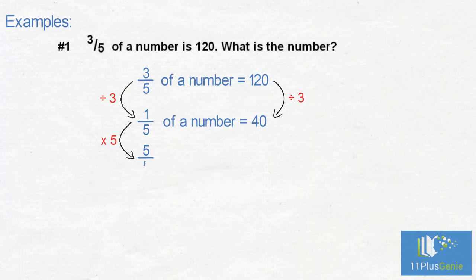40 times five equals 200. The number is 200.